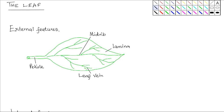The leaf is the main organ for photosynthesis. It has specific features that enhance the process of photosynthesis. We look at these features and how they enable the leaf as an organ to carry out photosynthesis efficiently. We first start by looking at the external features, focusing on the dicotyledonous leaf. Whatever features are present and true for the dicotyledonous leaf are also present and true for the monocotyledonous leaf.